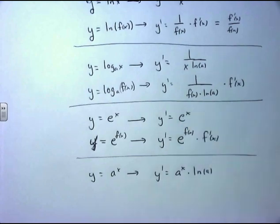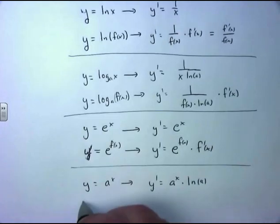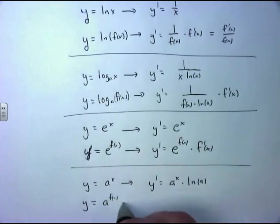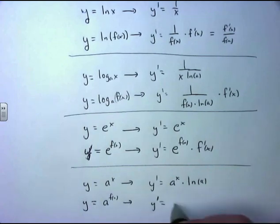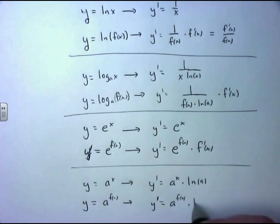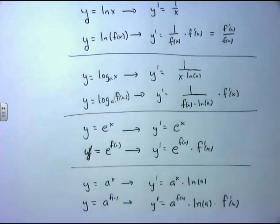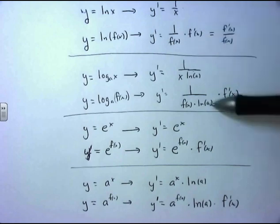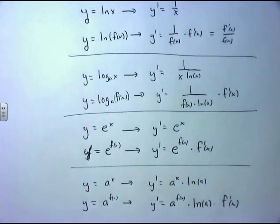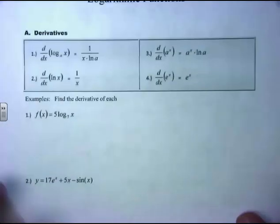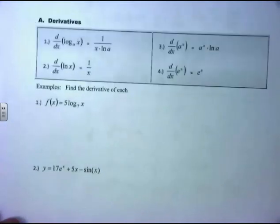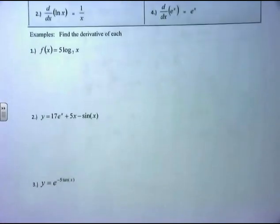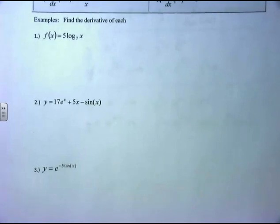The derivative of a to the x comes from the same exponential style formula. The chain rule version: if you have a raised to a function, then the derivative is a to that function times the natural log of the original base a, times the derivative of the exponent. So for every rule in this chapter and future chapters, every time we take a derivative there's the basic rule and its chain rule version. Now let's look at some examples.